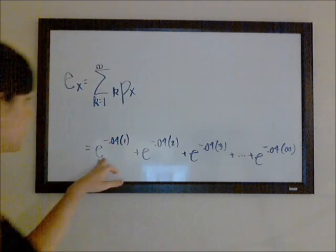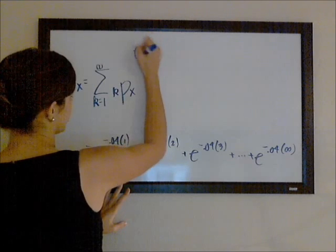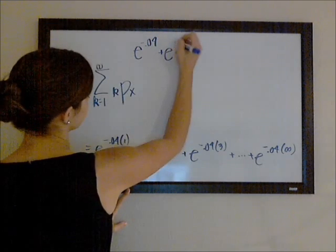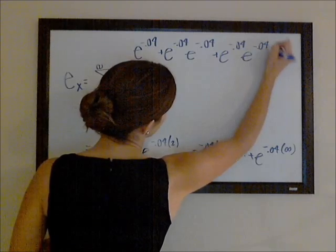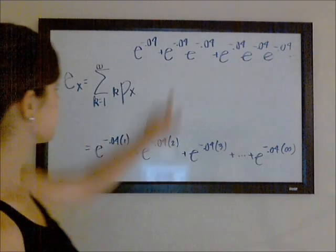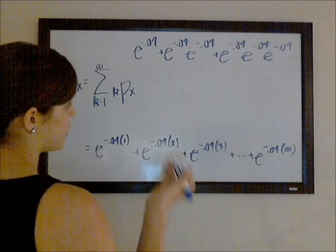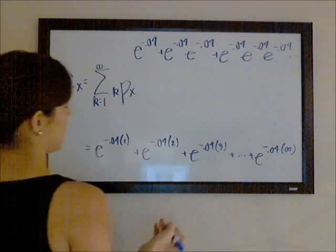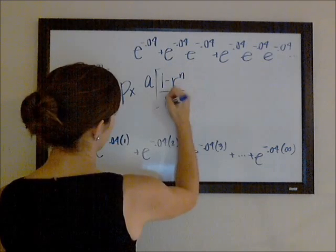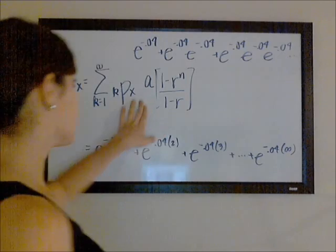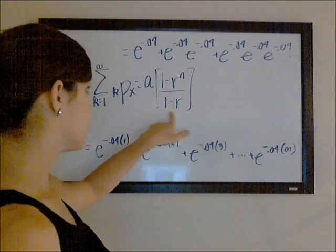Okay, so you can recognize that in each of these terms, we're multiplying by an additional e to the negative 0.04. This is the same thing as e to the negative 0.04 plus e to the negative 0.04 times e to the negative 0.04, and so on. So in each term you're multiplying by an extra e to the negative 0.04. To sum this up, I'm most comfortable using a times one minus r to the n over one minus r. This is going to equal the first term times one minus the ratio to the number of terms over one minus the ratio.